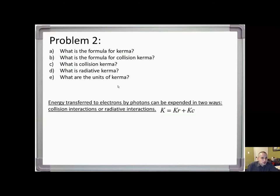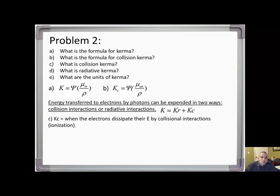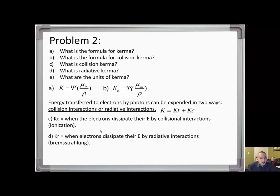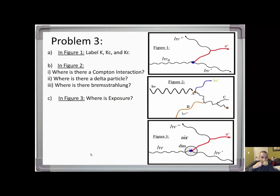Moving on to problem 2: the formula to calculate kerma is the energy fluence times mu_TR over rho. The formula for collision kerma is the energy fluence times mu_EN over rho. Energy transfer to electrons by photons can be expanded into collision interactions or radiative interactions. Collision kerma is when electrons dissipate energy by collision interactions like ionizations; radiative kerma is when electrons dissipate energy by radiative interactions like bremsstrahlung.